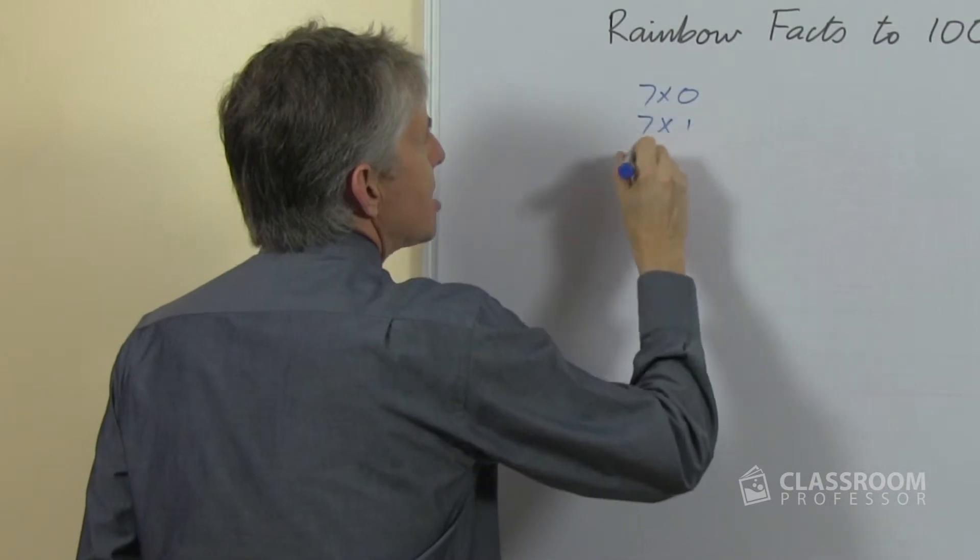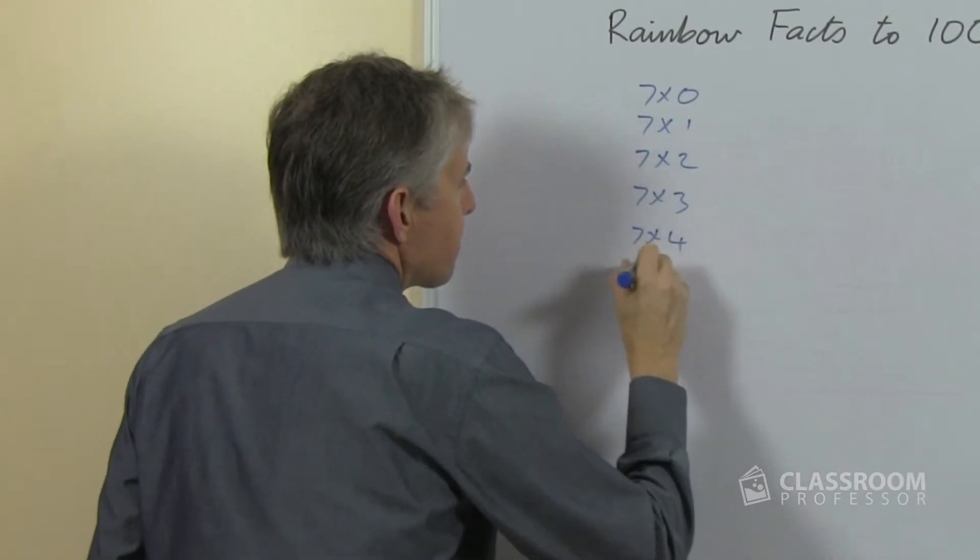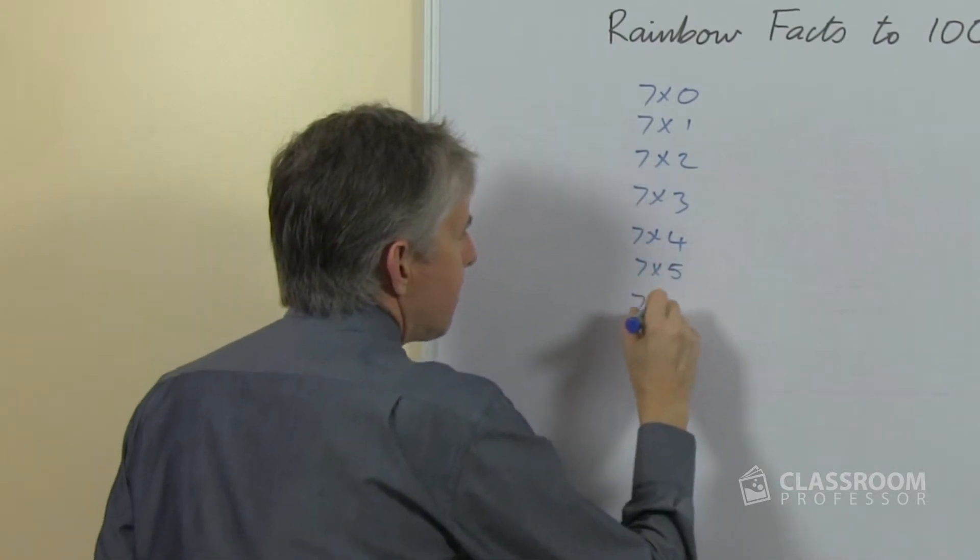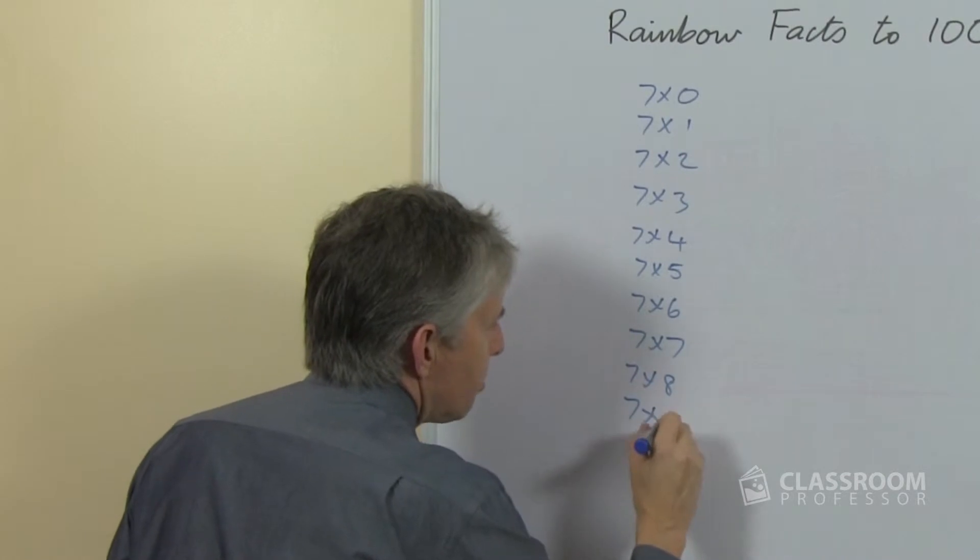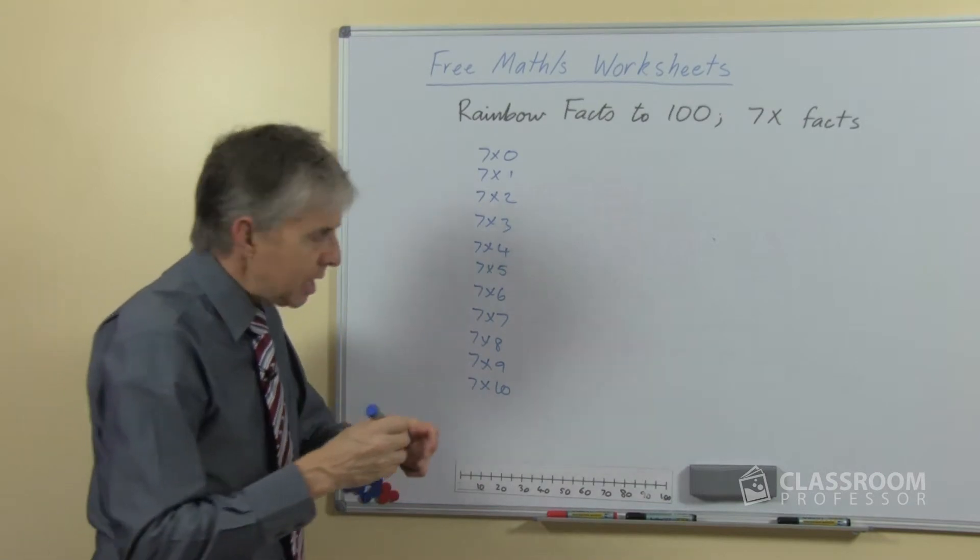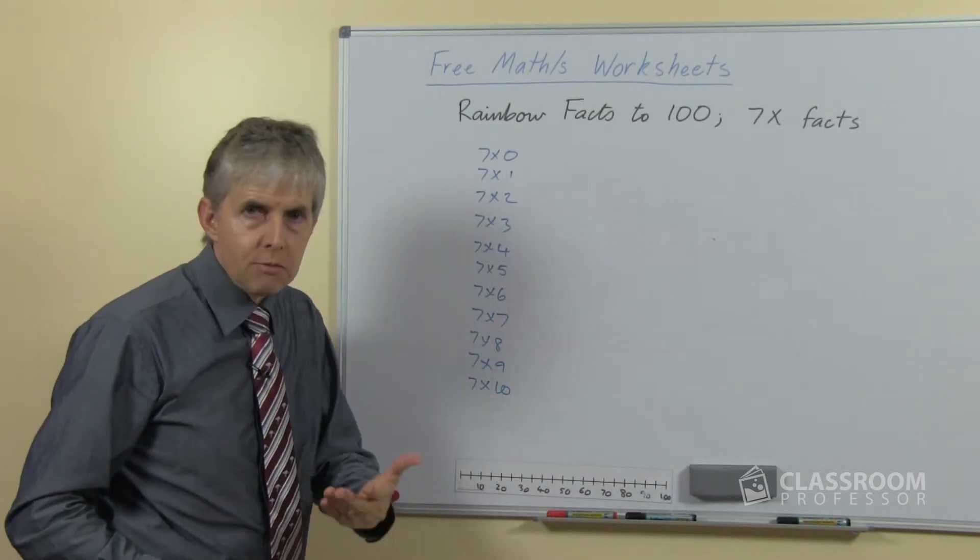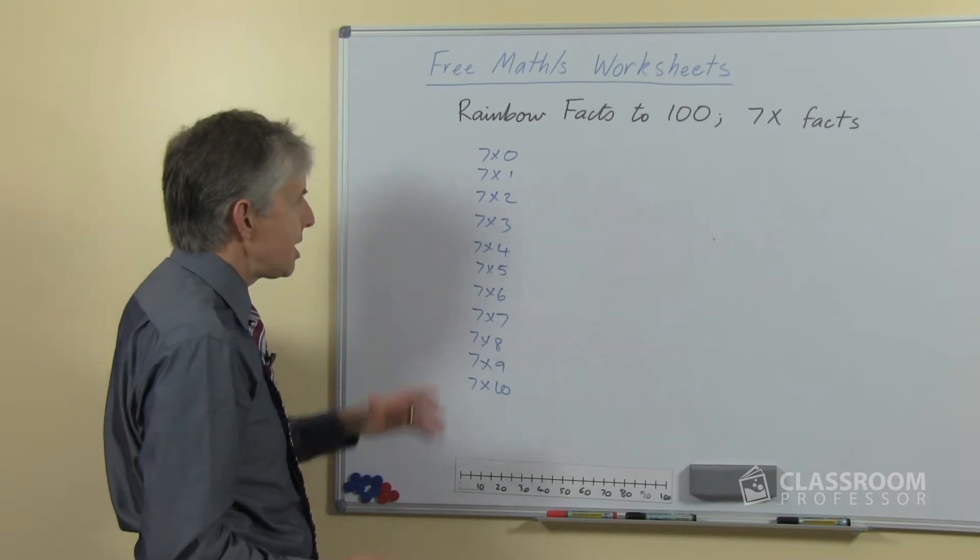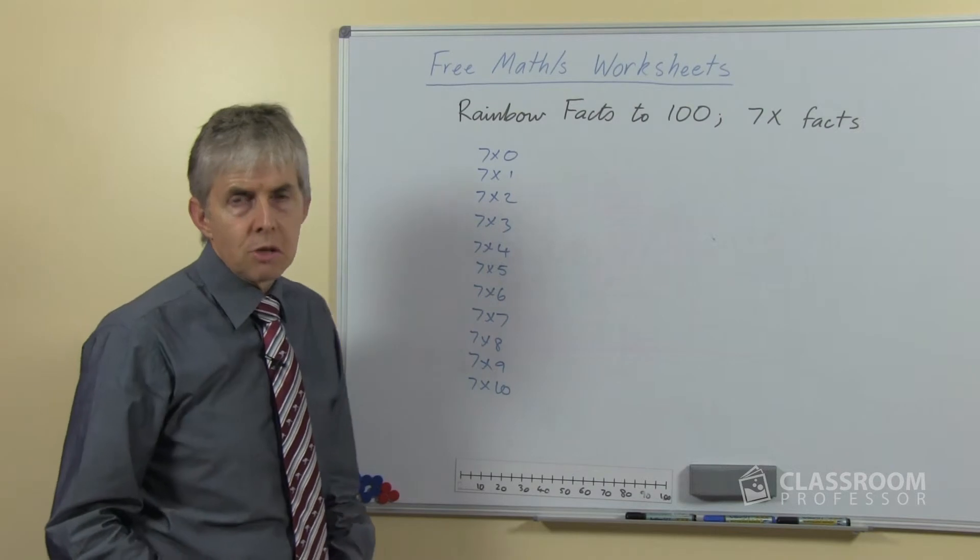Let's start with listing all the number facts that we need to know, and I'm going to stop at ten, although obviously you could go to twelve. Depending on where you teach, students may be only required to go to ten, or they may be asked to go to twelve. But let's stop at ten for the sake of this exercise, and then look at which ones the students already know.